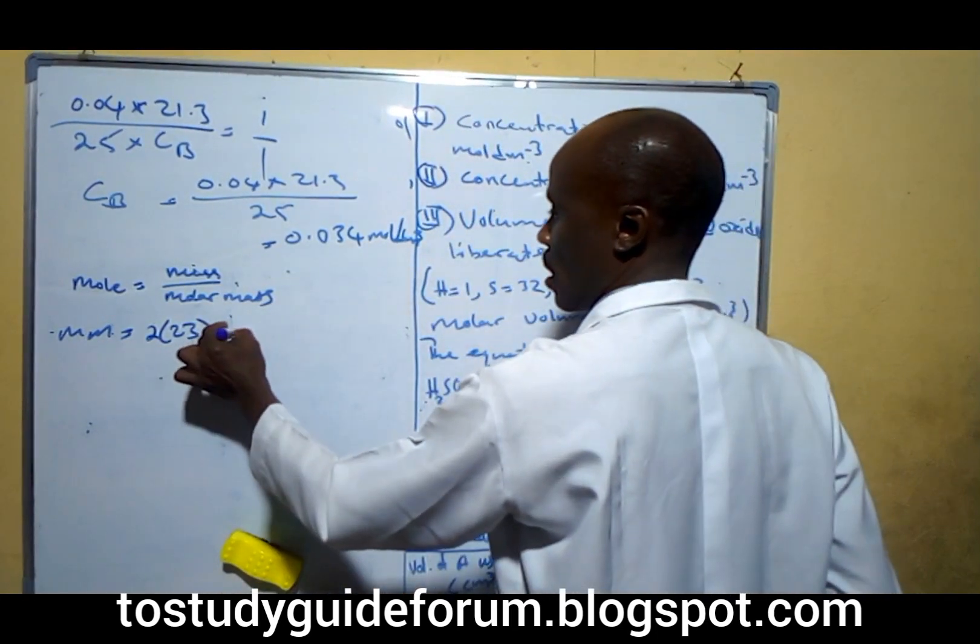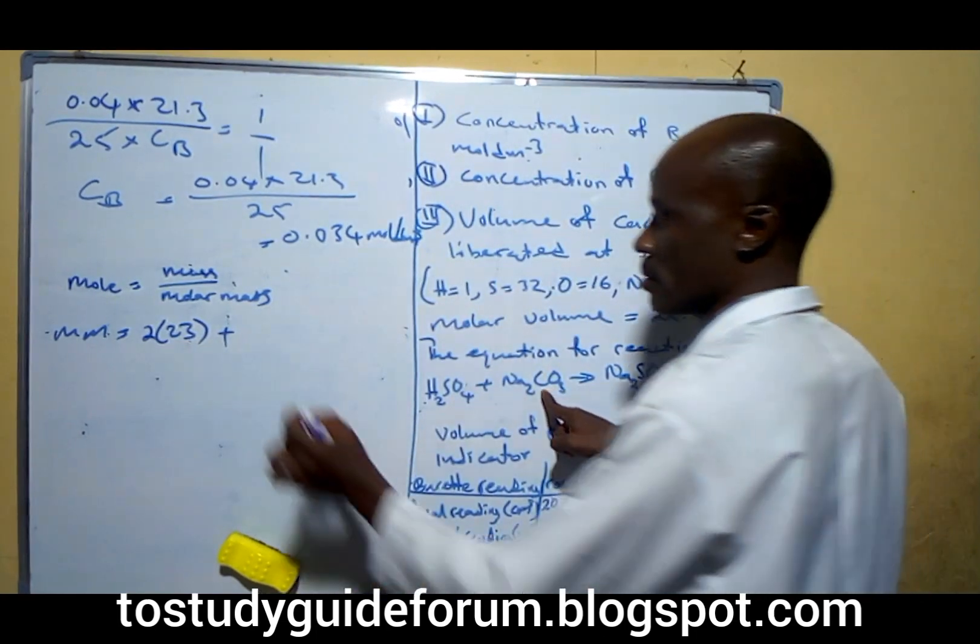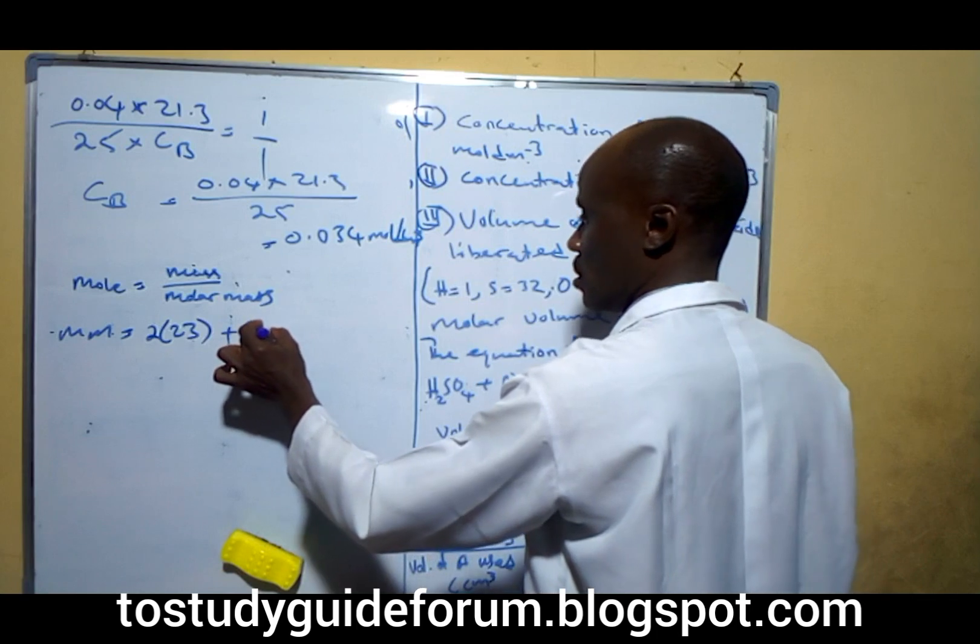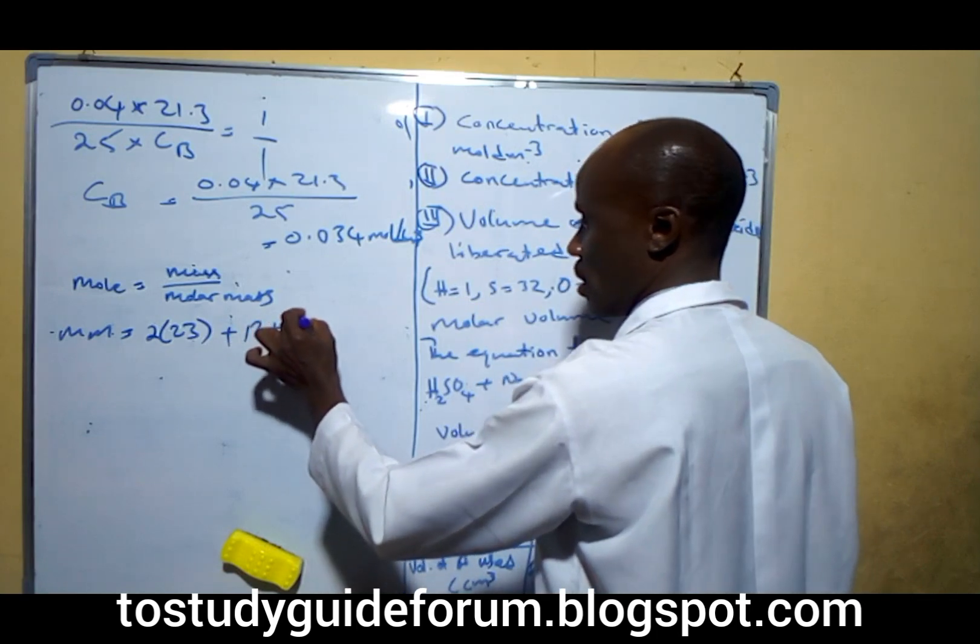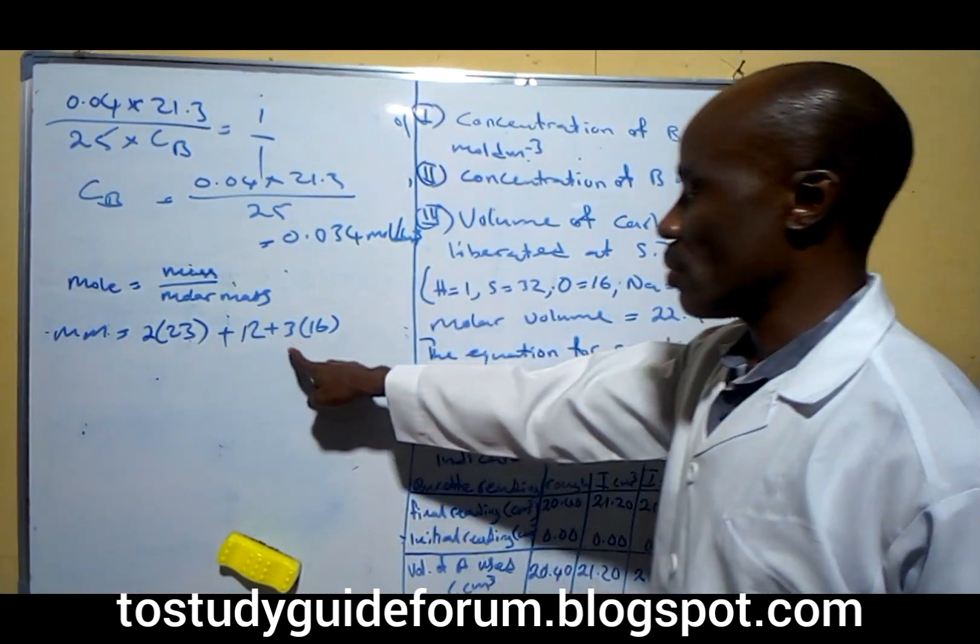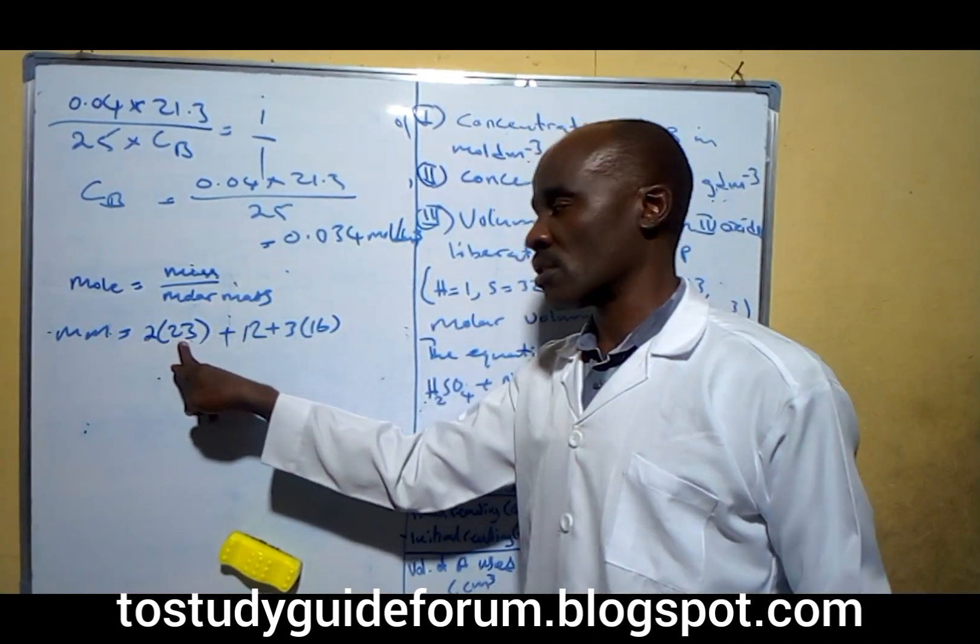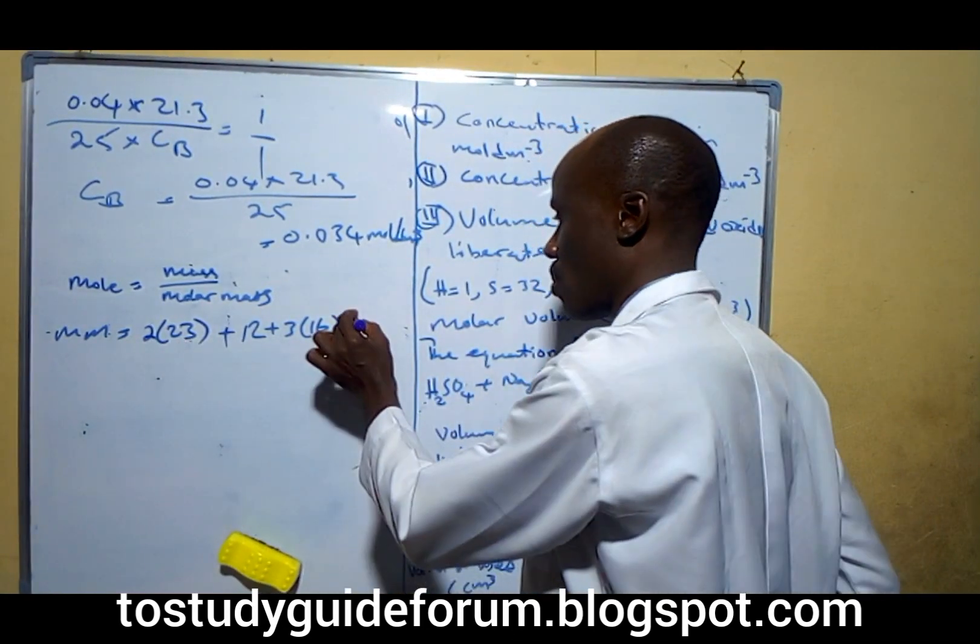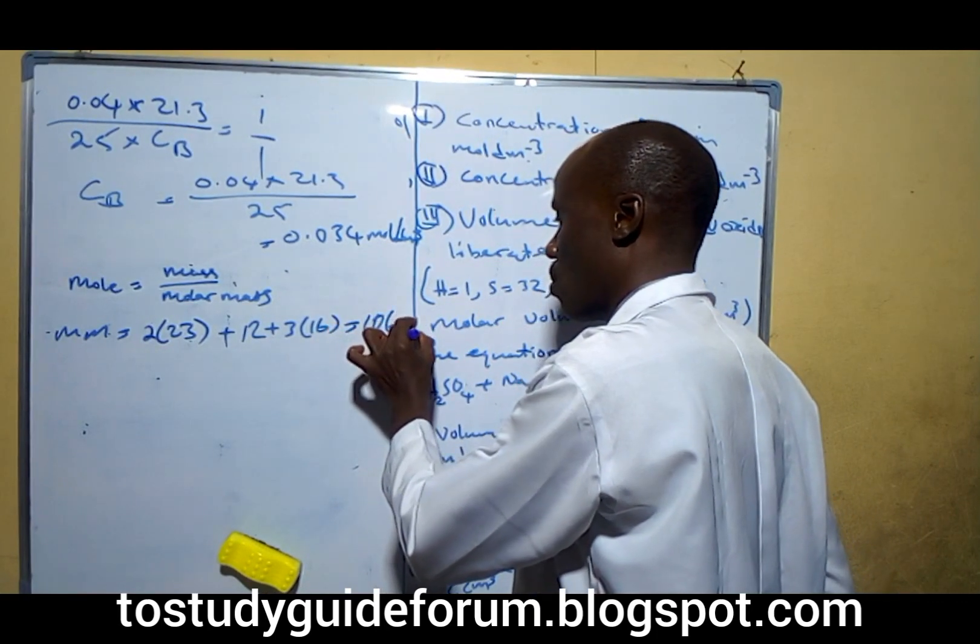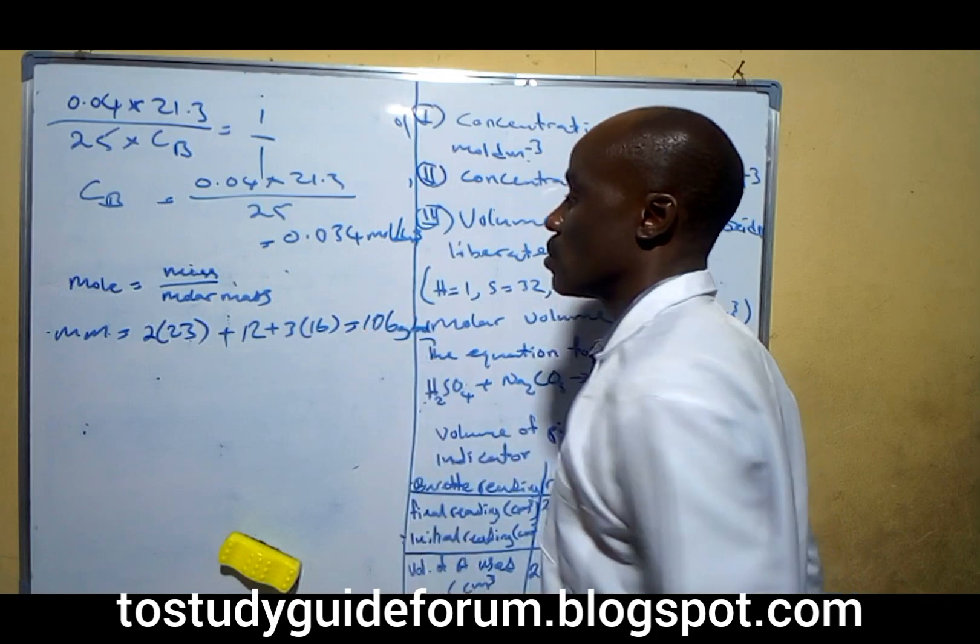Carbon is 1, that is 12. And oxygen is equal to 3 times 16. That means 3 will multiply 16, 2 will multiply 23. When we sum everything up, we'll have 106 grams per mole.